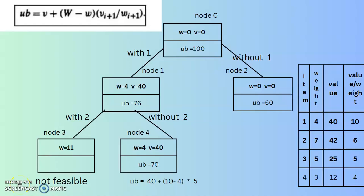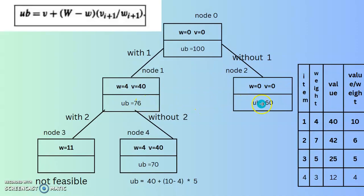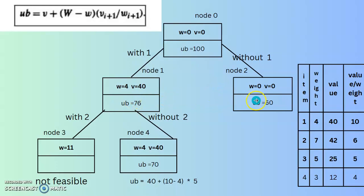Comparing the upper bound of the left subtree (76) and the right subtree (60), the left subtree has the higher value. We proceed in the direction of the larger upper bound, so we expand the left subtree (upper bound = 76).